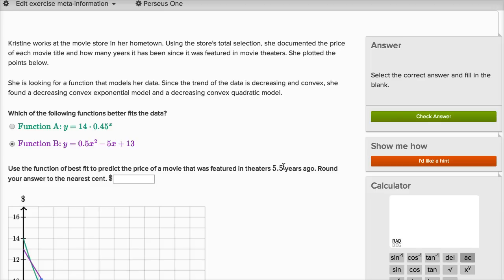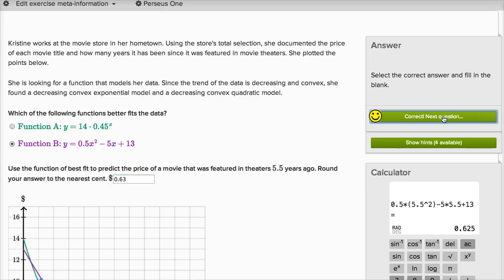So Y is going to be equal to 0.5 times X squared, so X is 5.5, 5.5 squared. So then we have minus five times X again, so minus five times 5.5, and then we have plus 13. And what does that get us? That gets us 62 and a half cents. And if we were to round our answer to the nearest cent, that's going to be 63 cents, and we got it right.